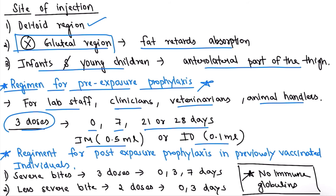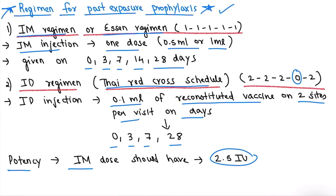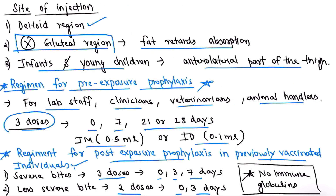The last regimen is for post-exposure prophylaxis in previously vaccinated individuals. For a severe bite (category 3), three doses are given on days 0, 3, and 7. For a less severe bite (category 2), two doses are given on days 0 and 3. No immunoglobulins are given to previously vaccinated individuals. Thank you for watching — please like and subscribe for more medical videos.